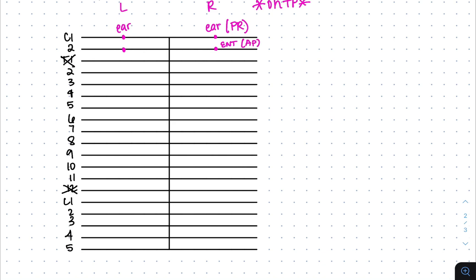Now the rest are mostly on the transverse process. At T2, you'll start with the heart. Similarly, you'll have the upper lung and arms. You'll have your lower lungs. On the left side, you'll have stomach acid, stomach motility, and your spleen. On the right side, you'll have your liver, liver plus gallbladder, and your pancreas. The next three are your small bowel — similar pattern to the front.